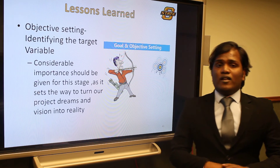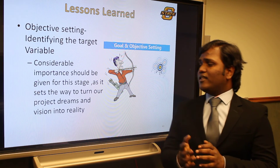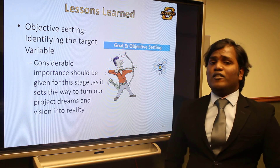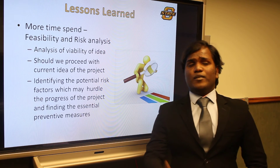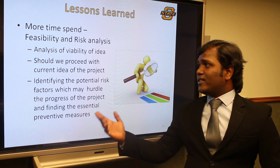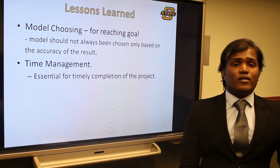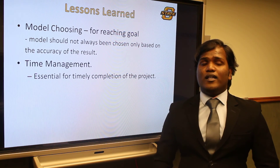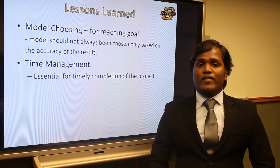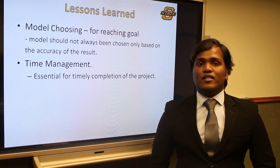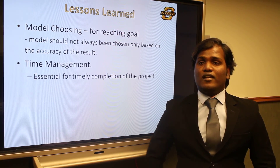Moving on to the lessons learned. First, we learned the lesson of objective setting — identifying the target variable. We spent a lot of time giving considerable importance at this stage as it sets the way to turn our project vision into reality. More time was spent on feasibility and risk analysis, because feasibility analysis tells exactly how feasible you are in achieving your targets, and risk analysis helps identify potential risk factors that can hinder your project. Model choosing: a model is not always chosen based on accuracy alone — it has to be chosen based on the datasets you have. And time management is very much essential as clients need everything on time. Hence, our team recommends our model to be used by the university in analyzing the performance of international students and recommending the admission criteria. Thank you.